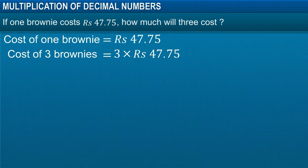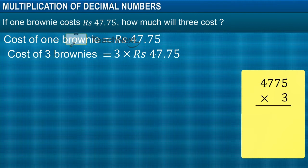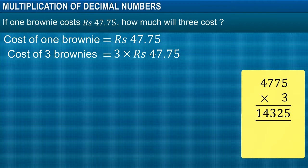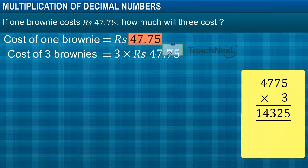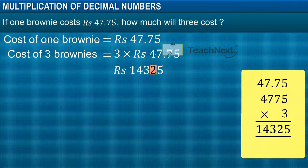To multiply a whole number by a decimal number, we first multiply the two numbers ignoring the decimal. We get the product as shown here. Now, we need to insert the decimal point in the answer by counting the decimal places in the original decimal number. There are two digits to the right after the decimal point, so we will insert the decimal point two places from right to left in the answer.